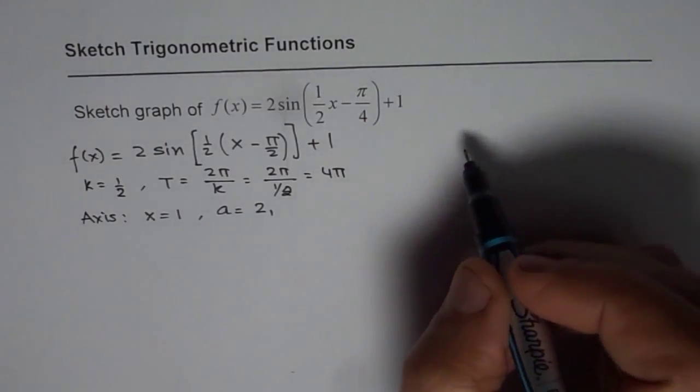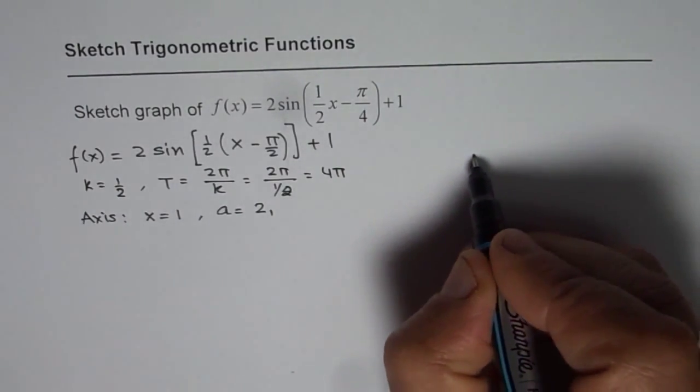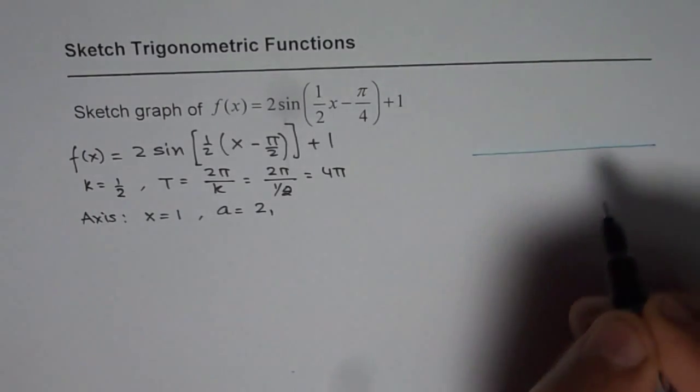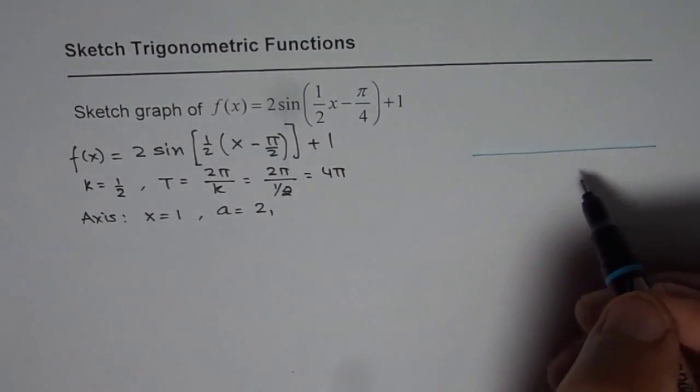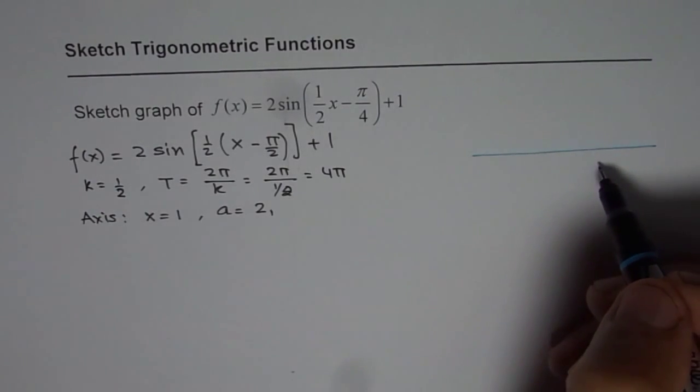So first step is your axis is 1. So draw a dotted line at 1. That is my axis at 1. I am just giving you very simple steps to sketch this function. I am not doing an exact graph for this.